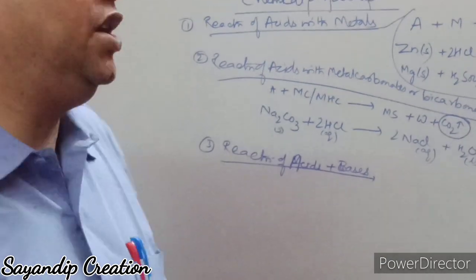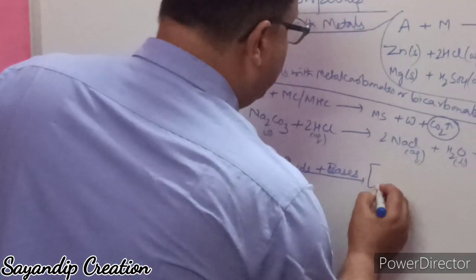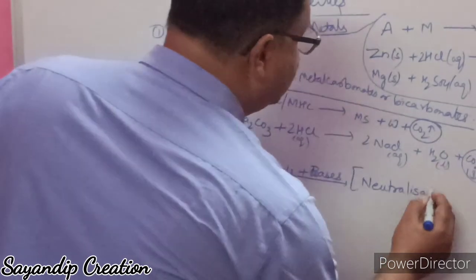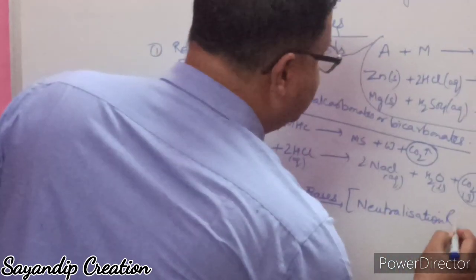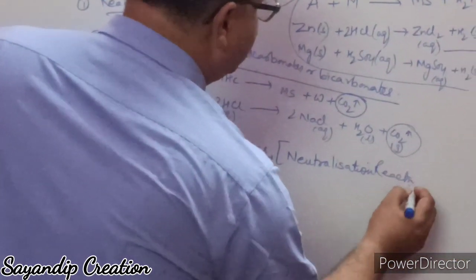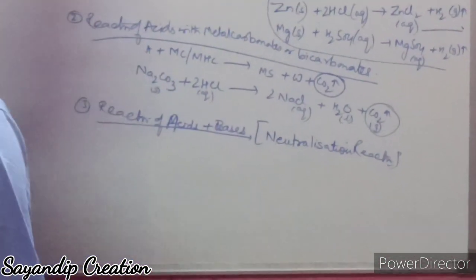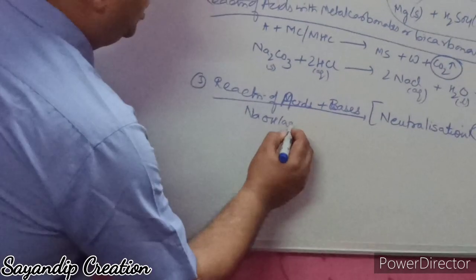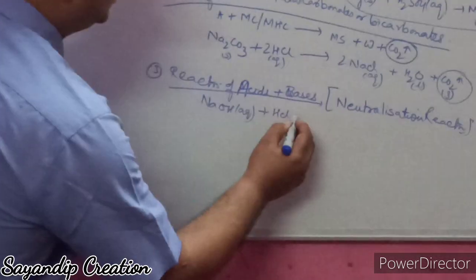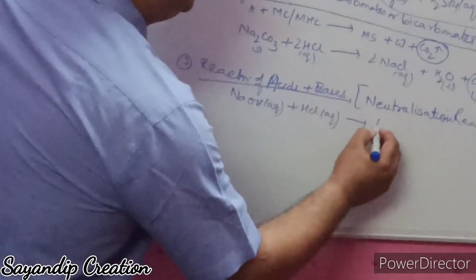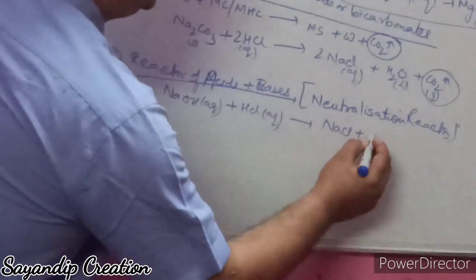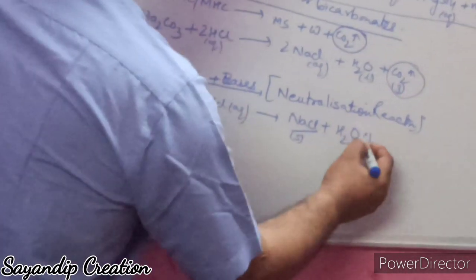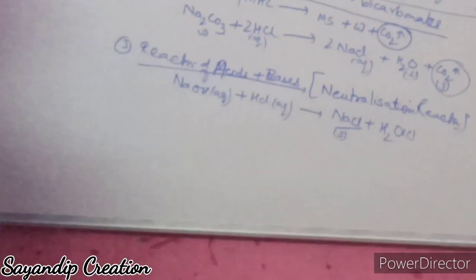The third chemical property is the reaction of acids with bases, which is called a neutralization reaction — you studied this in the last chapter. For example: NaOH (aqueous) + HCl (aqueous) → NaCl (aqueous) + H2O (liquid). This is called a neutralization reaction.